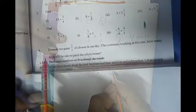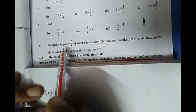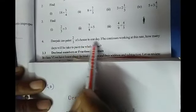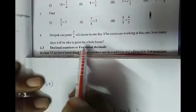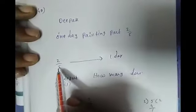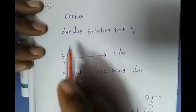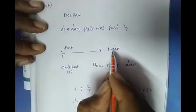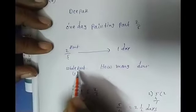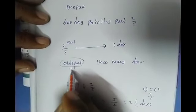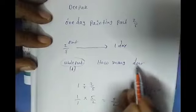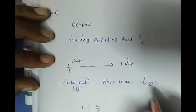In this way, you try to do it. Now, fourth question: Deepak can paint 2 by 5 of a house in one day. If he continues working at this rate, how many days will he take to paint the whole house? Deepak paints 2 by 5 of the house in one day. The whole house means 1 full part. So we need to find how many days he will take to complete it.